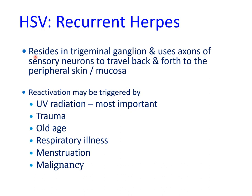Following primary infection, the herpes simplex virus resides in the trigeminal ganglion and uses axons of the sensory neurons to travel back and forth to the peripheral skin and mucosa, causing recurrent infection. Reactivation of the virus may be triggered by exposure to ultraviolet radiation, trauma, old age, respiratory infections, menstruation, and malignancy, leading to recurrent herpes simplex virus infections which manifest in a number of ways.